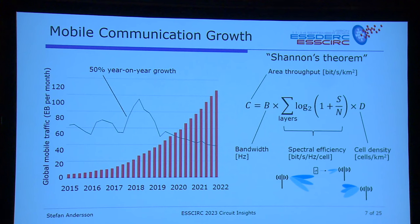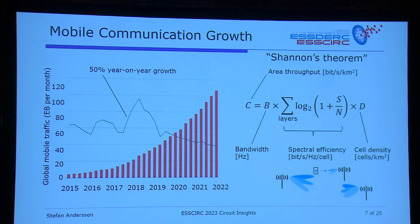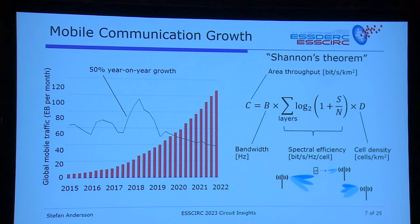I hope many of you know Shannon's theorem — if you don't, you will. Capacity is a function of bandwidth, and frequency is not an endless resource. We also have spectral efficiency via signal-to-noise ratio, and cell density. A cell is typically a base station serving a certain area. You've seen macro cells — a huge tower with many antennas on top serving a very large area. That may be cost-efficient, but smaller cells would better optimize capacity, though with higher cost.